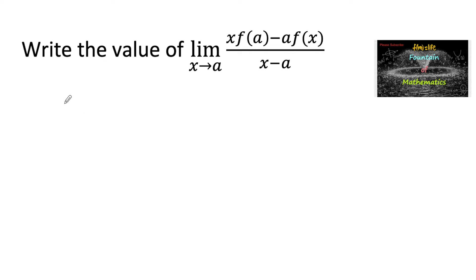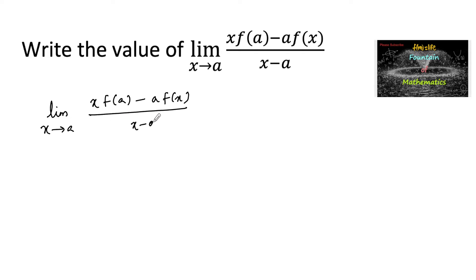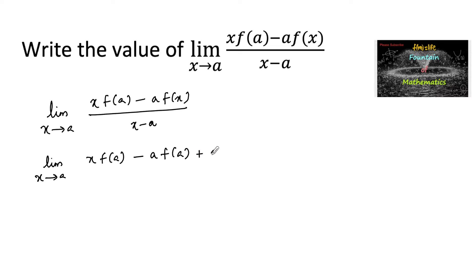Write the value of limit x tends to a of x into f(a) minus a into f(x) upon x minus a. Let us simplify this. Limit x tends to a: x into f(a). Let us add and subtract a times f(a), and then minus a times f(x), divided by x minus a.